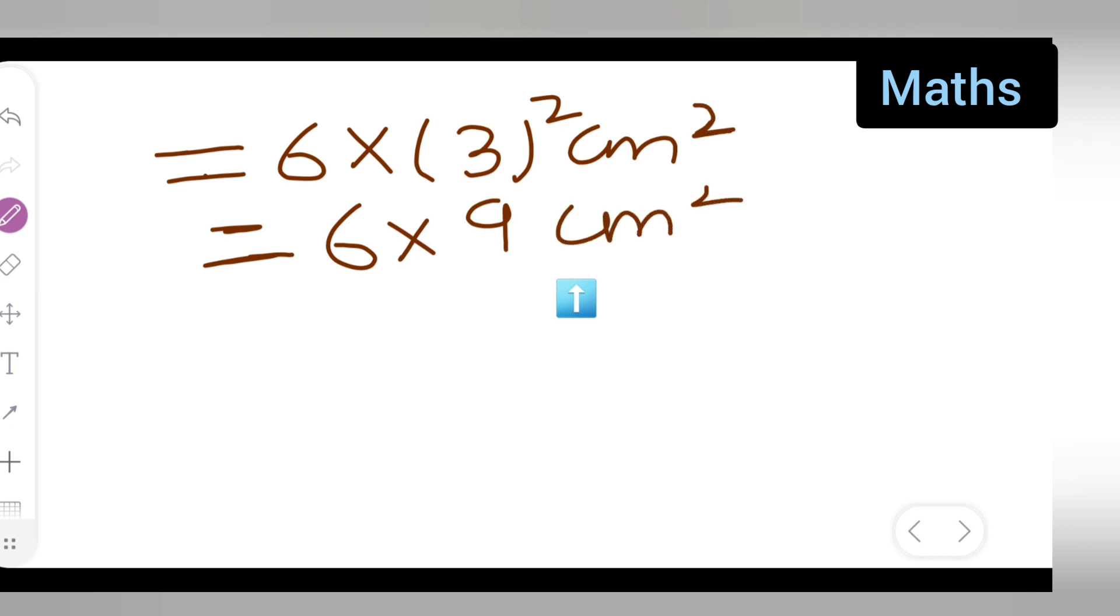Centimeter square. So you all have to multiply this. What are you going to get? 6 times 9 is 54 centimeter square. 6 nines are 54 centimeter square.